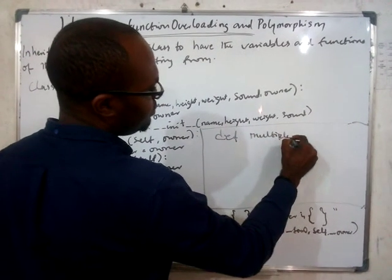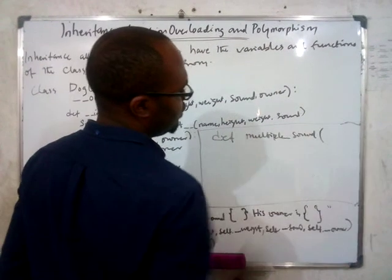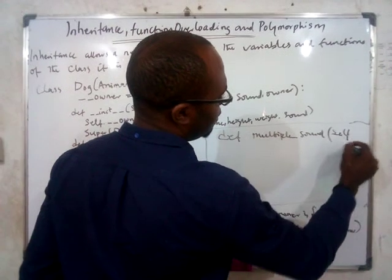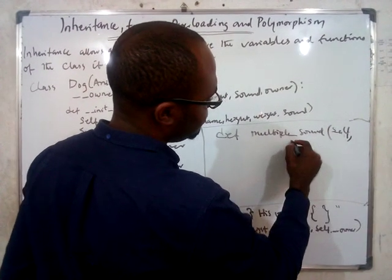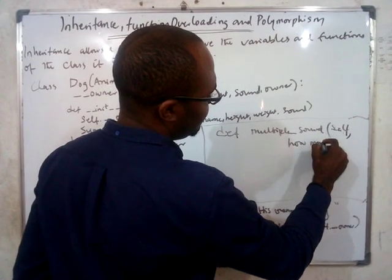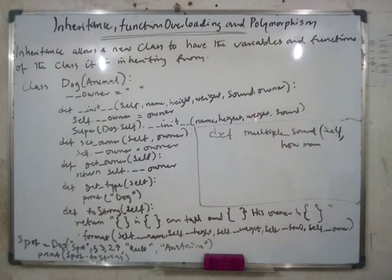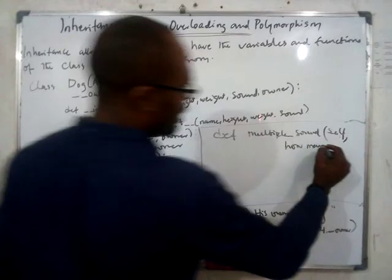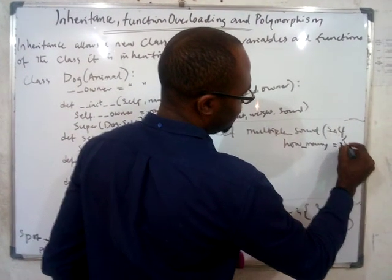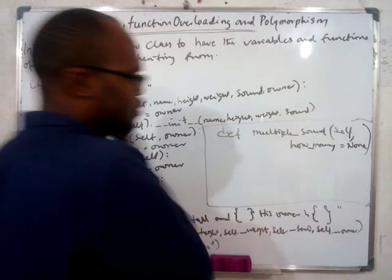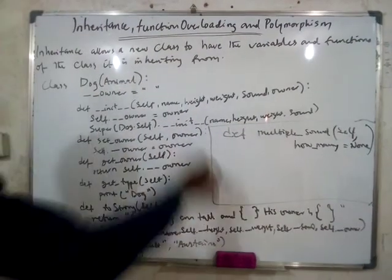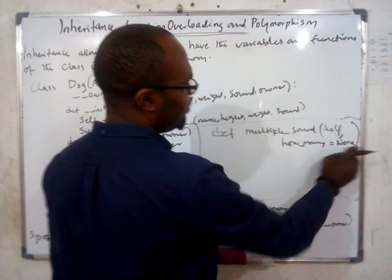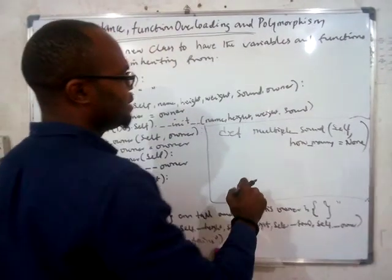This new function is called multiple_sound. You are going to define this function and pass a variable called how_many. The variable is simply how many sounds it makes. So if the sound is 'mew', it can make that sound multiple times depending on the value of how_many that you pass.